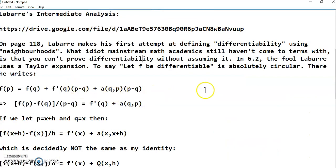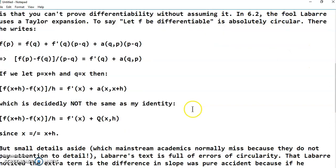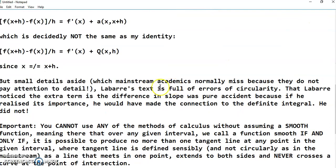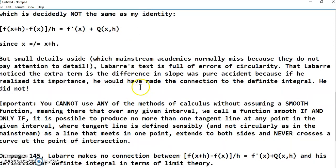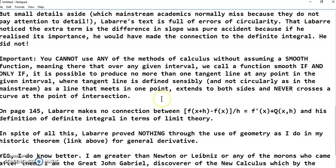LeBar was not on the same page as I am. In fact, he wasn't even in the same library. One thing that mainstream academics do not notice is that you cannot use any of the methods of calculus without assuming smooth function, meaning that the function you are considering is by default differentiable on a given interval. Unless, of course, you can find a particular point where it isn't and prove that that point is, you can't differentiate. In other words, there is no derivative at that point.